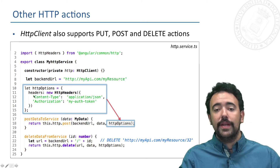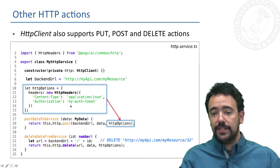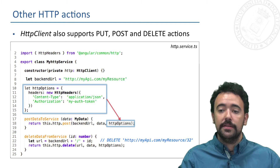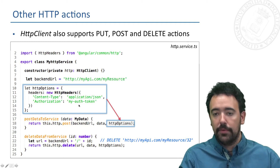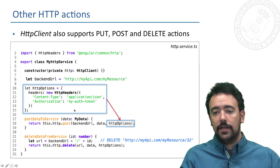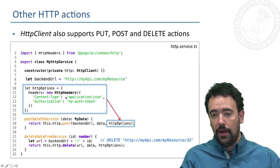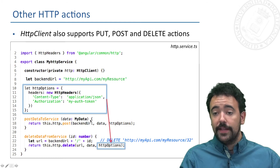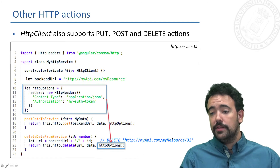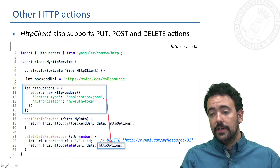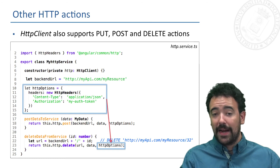For the POST options, we need to specify headers such as the content type and for instance an authorization header. When sending a DELETE we also have to include options, and in this case we are deleting a specific resource from the backend service. You can always check the full documentation in Angular.